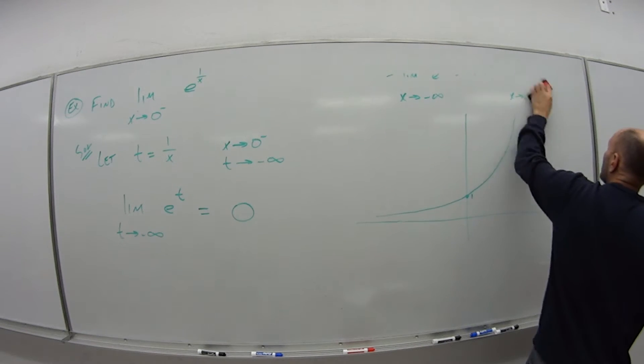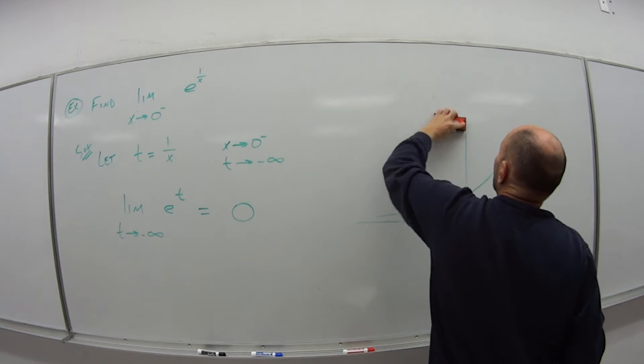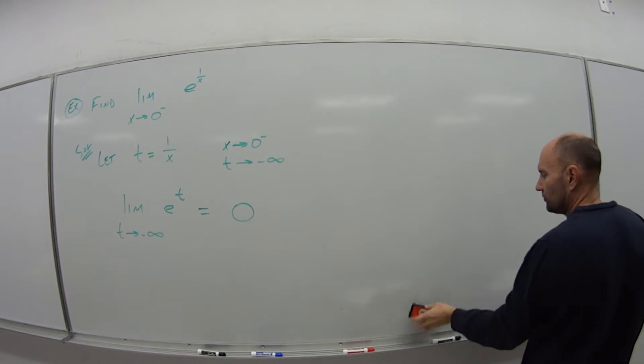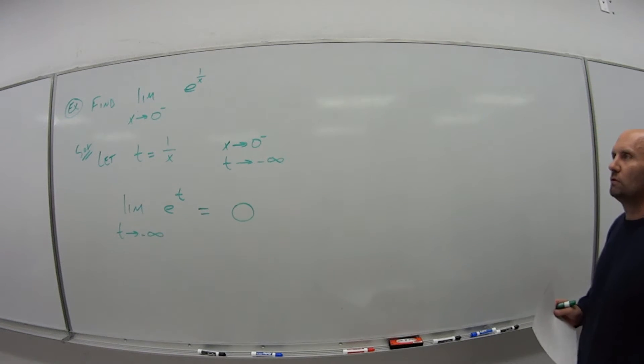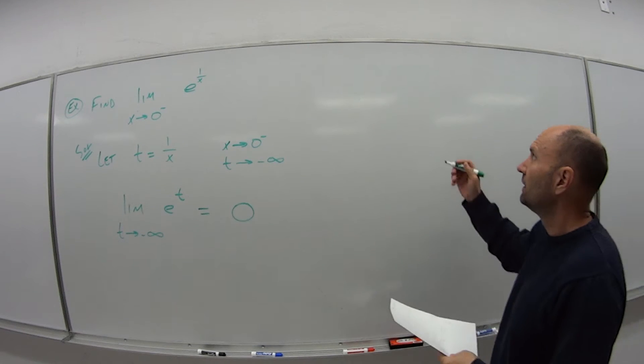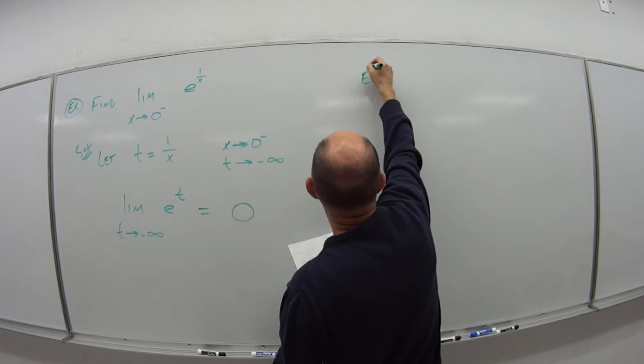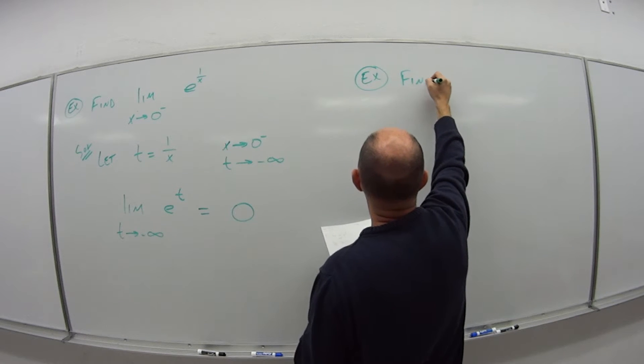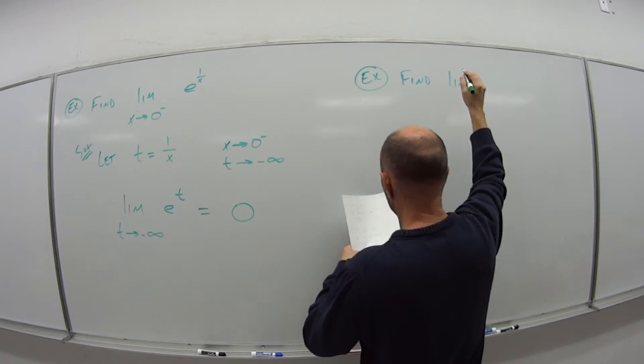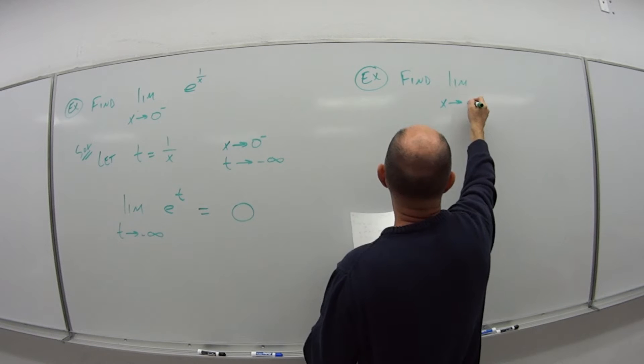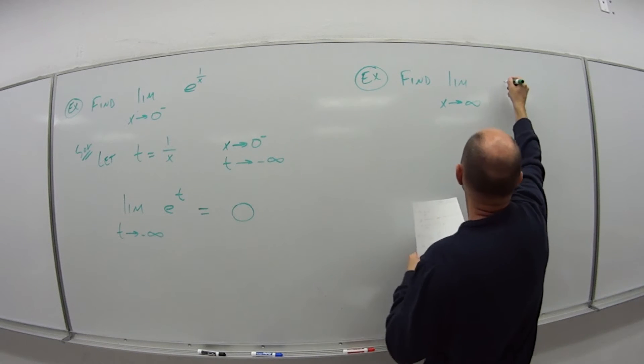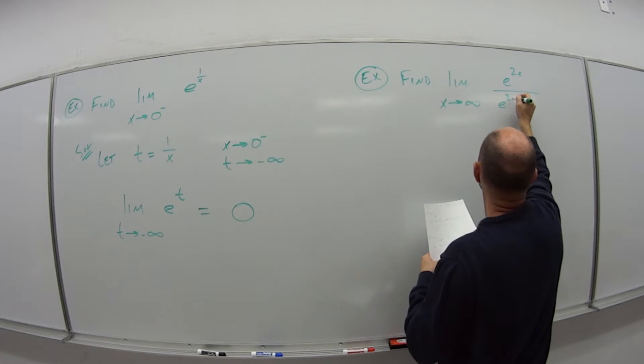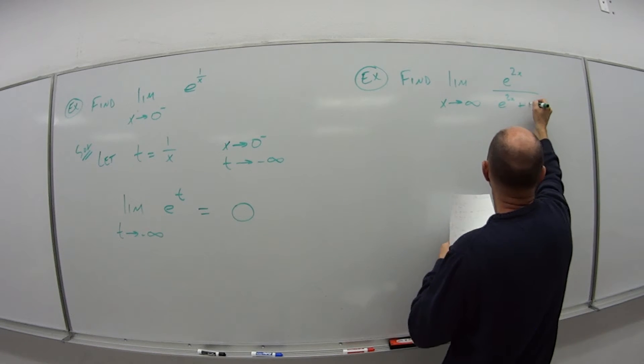We'll get one more example. In that one we used some substitution to simplify our original limit. In this one, we're going to flash back a little bit to chapter 1, when we were doing limits. We want to find the limit as x goes to infinity of e to the 2x over e to the 2x plus 1.